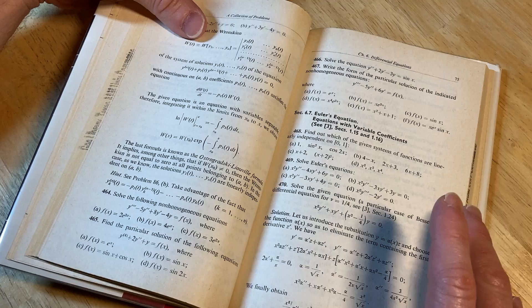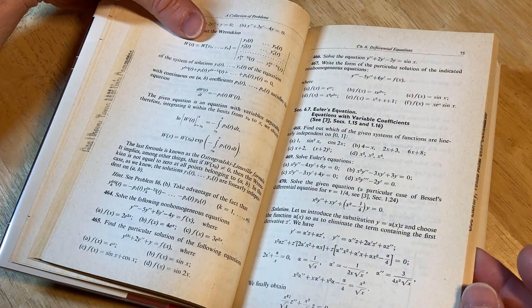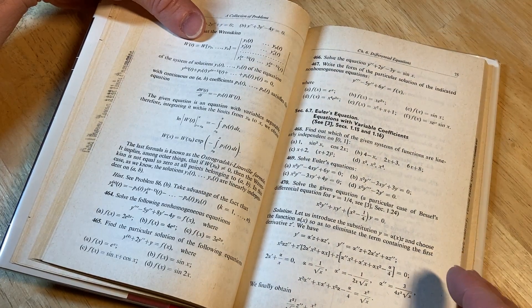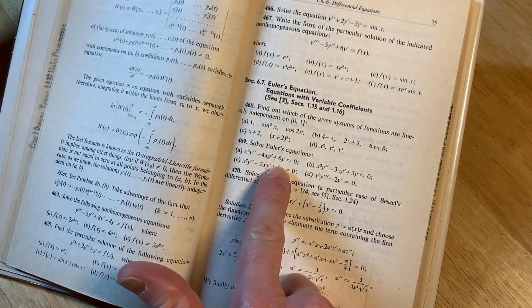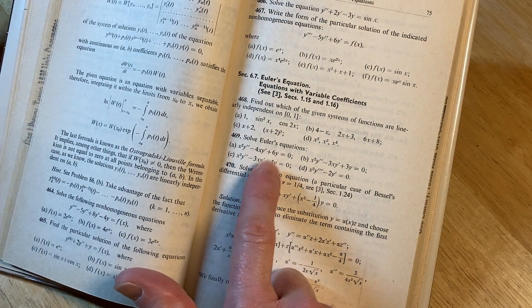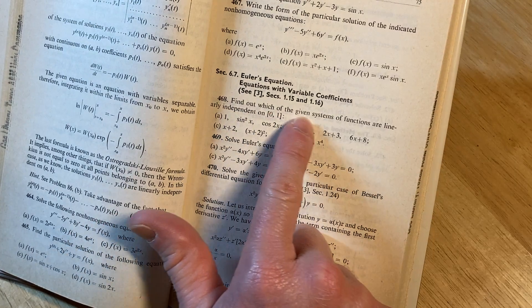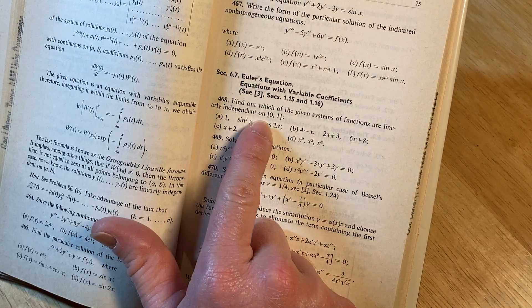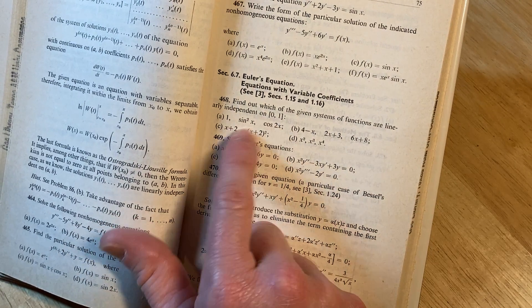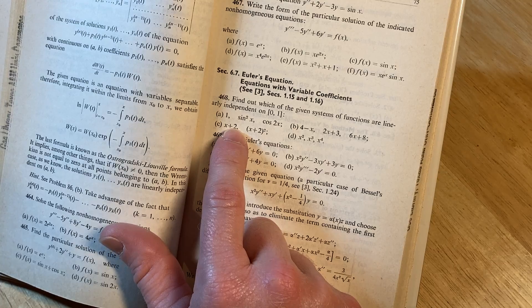It's just tons of mathematics. It's great. It's really great. Here we have some Euler equations. Oh yeah, these are cool. These are differential equations. Look at this. Find out which of the systems of functions are linearly independent on zero, one. Oh, ha ha. That's fun. Yeah.